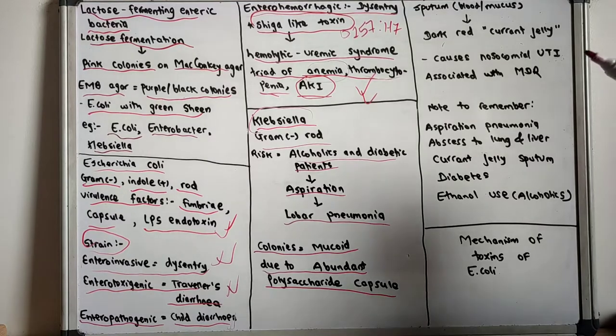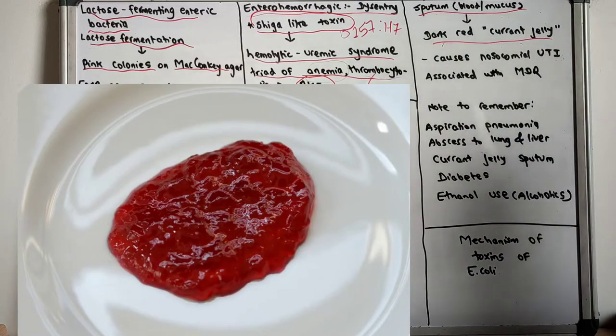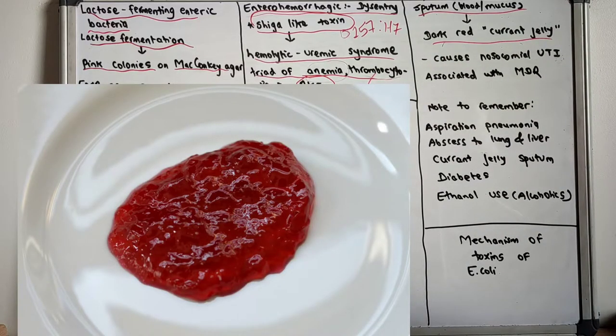The sputum of the person infected with Klebsiella occurs as currant jelly-like. You can also see in this picture currant jelly-like sputum is seen - that is, blood and mucus is mixed in the sputum causing the currant jelly-like sputum.